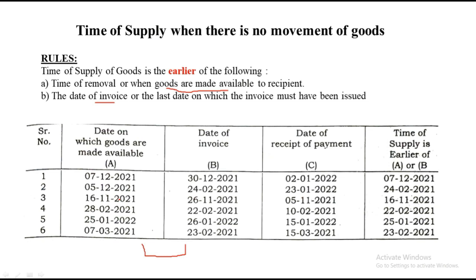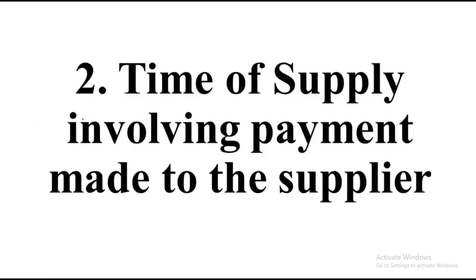Very simple. Keep in mind: when there is no movement of goods, date when the goods are made available and invoice — whichever is the earlier date will be your time of supply. That was the first type when there is no movement of goods. Now we jump to the second type: time of supply involving payment made to the supplier. So now there has to be some payment made in the question.